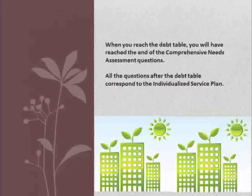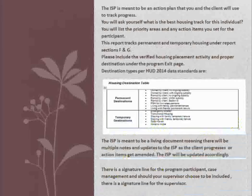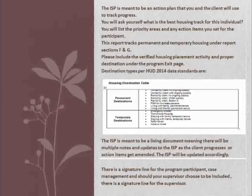When you reach the debt table, you will have reached the end of the Comprehensive Needs Assessment questions. All the questions after the debt table correspond to the Individualized Service Plan. The ISP is meant to be an action plan that you and the client will use to track progress. You will ask yourself: what is the best housing track for this individual? You will list the priority areas and any action items you set for the participant. This report tracks permanent and temporary housing under Report Sections F and G.